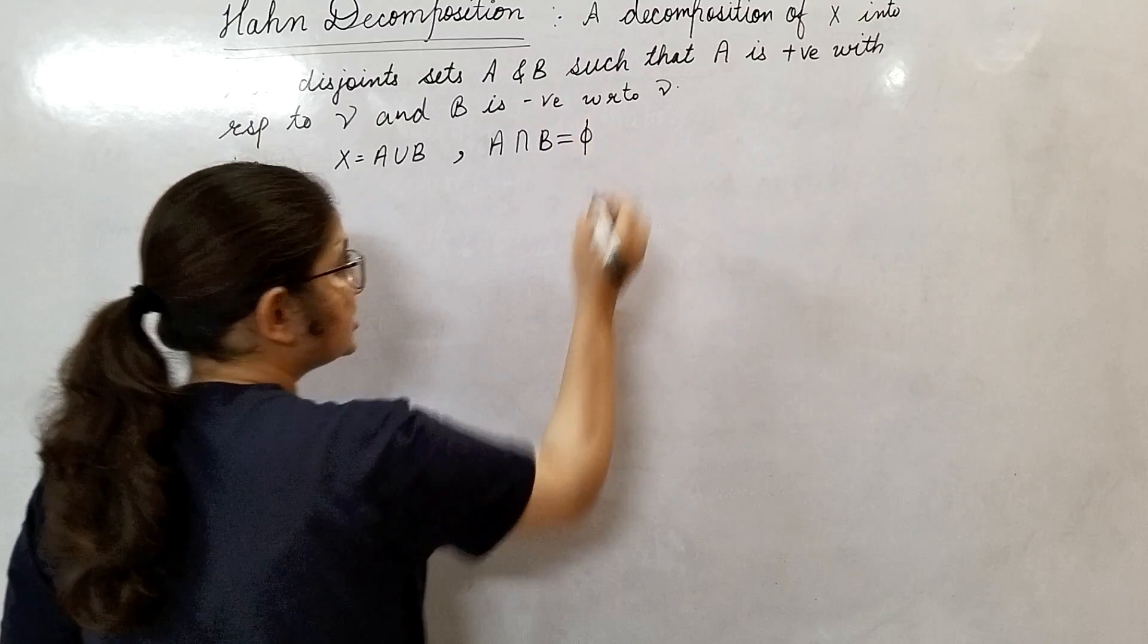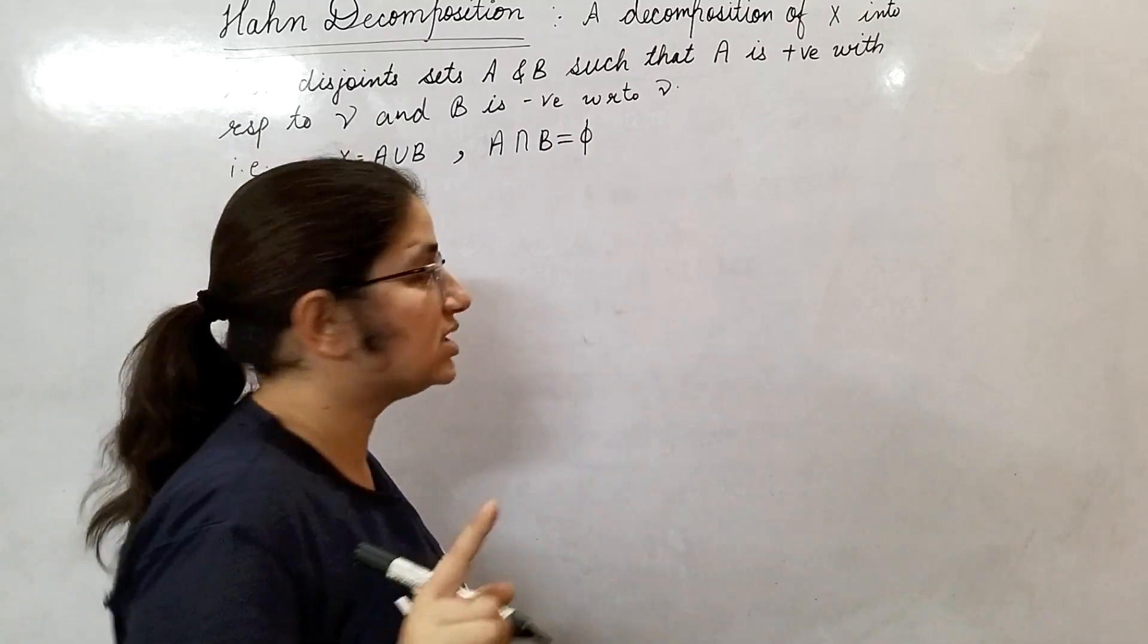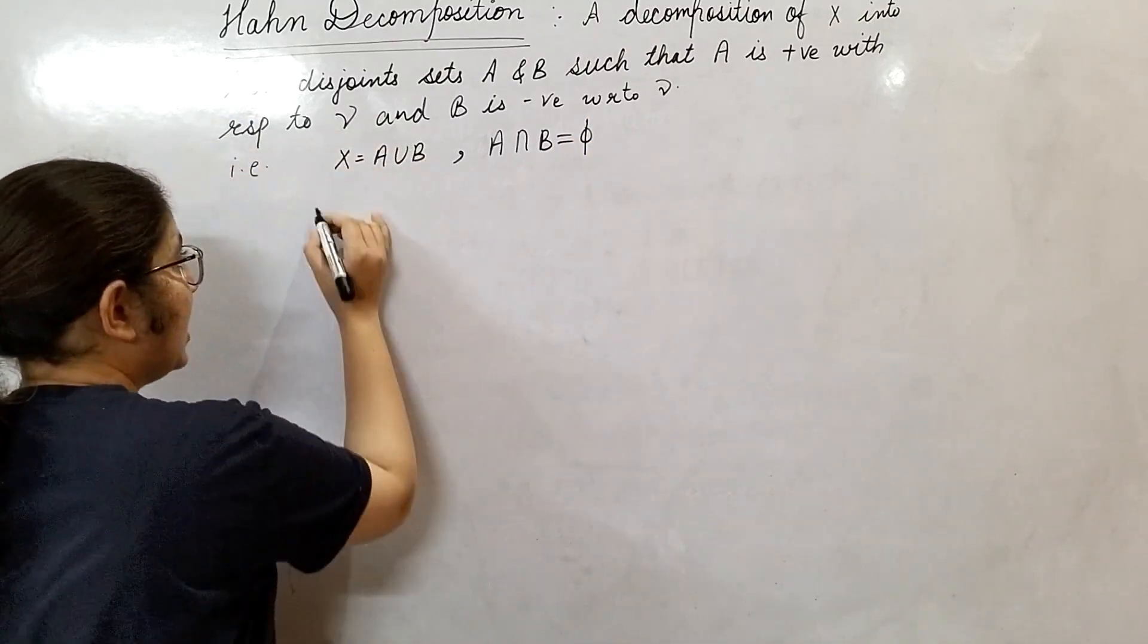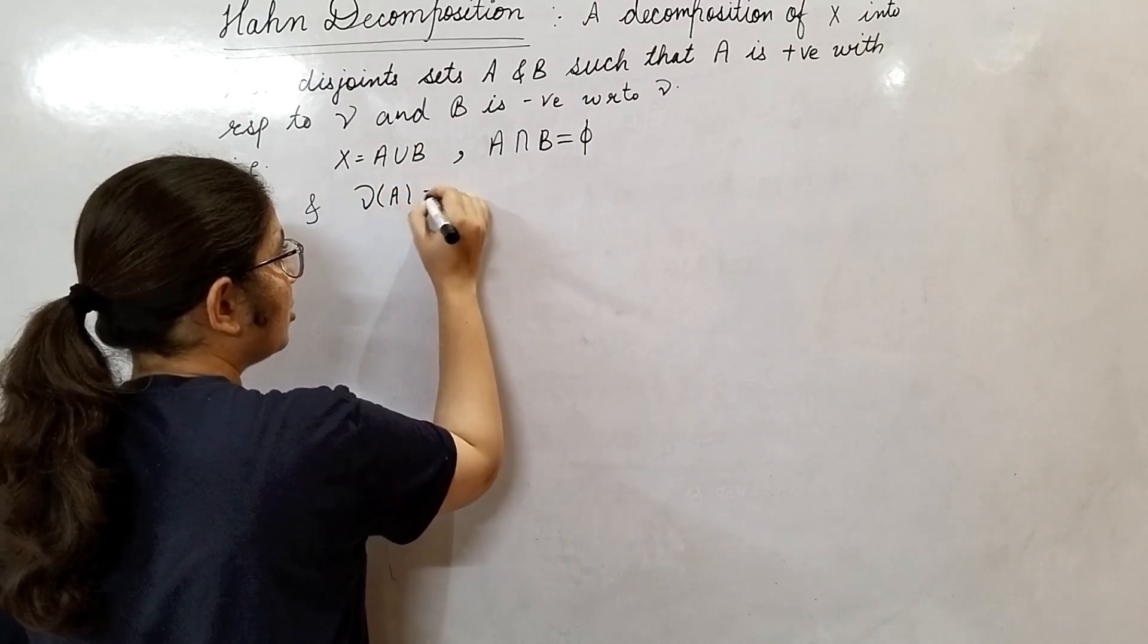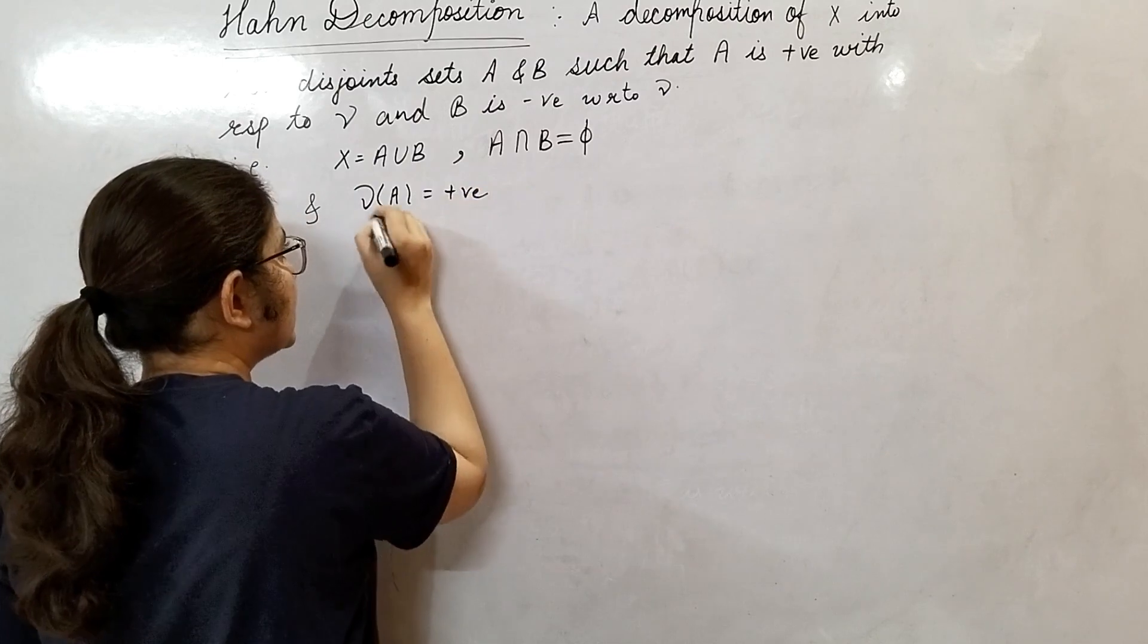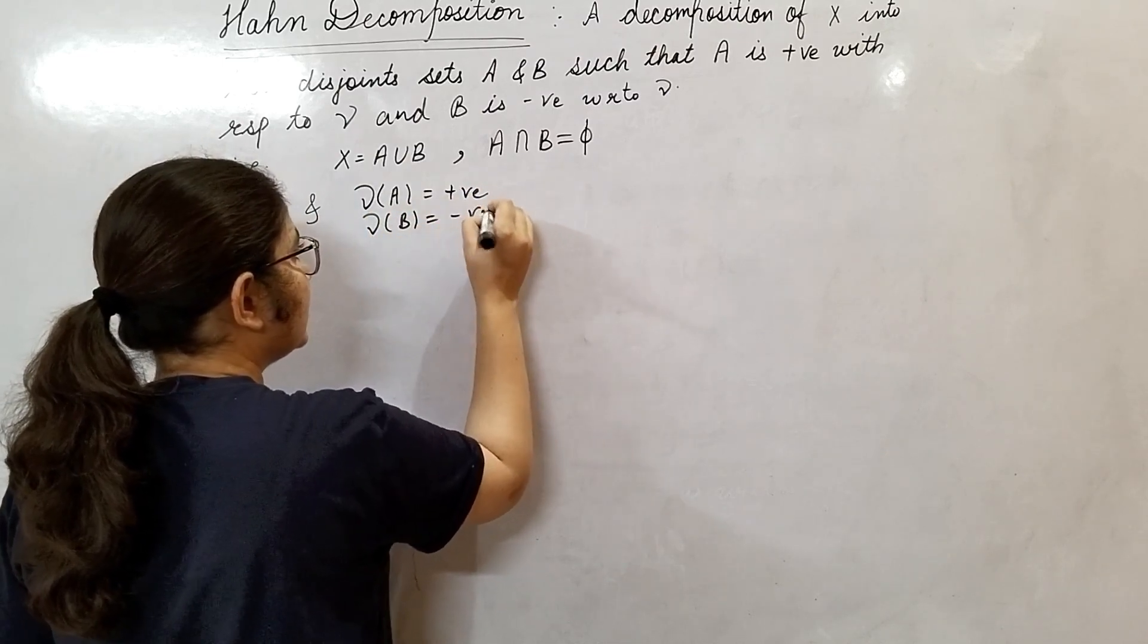What is this? This is empty. Disjoint means empty. And signed measure of A is positive, signed measure of B will be negative.